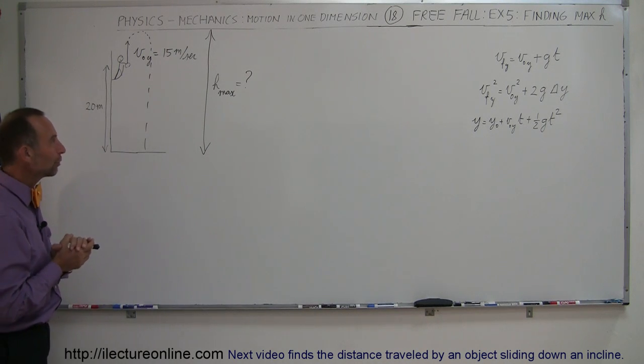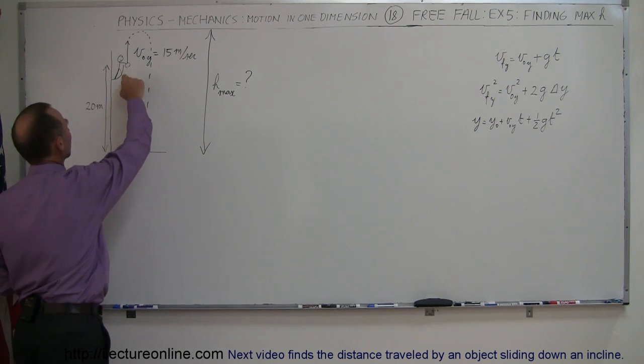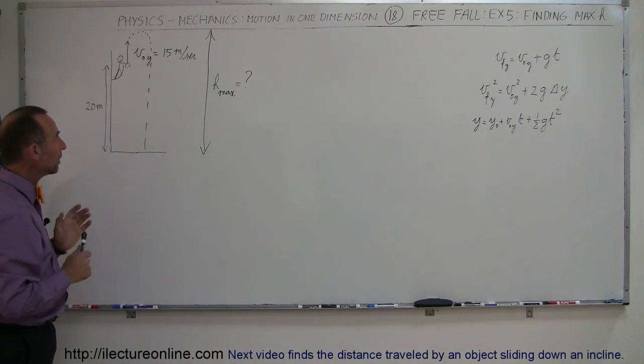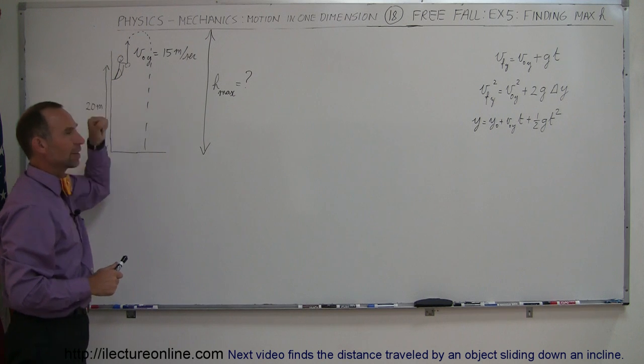In our next example on free fall, we're going to find the maximum height. Now this looks a lot like the previous example that I've shown you. A person at a height of 20 meters throws the ball upwards starting with initial velocity at 15 meters per second. But now what we're going to try and figure out is how high will the ball go before it starts falling down again.